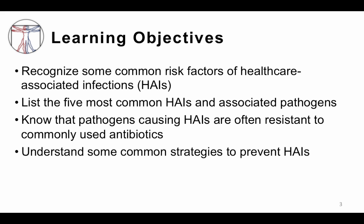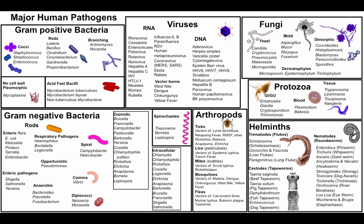Learning objectives for this module are for you to recognize some of the common risk factors of healthcare-associated infections, to be able to list the five most common healthcare-associated infections and their common associated pathogens, know that pathogens causing healthcare-associated infections are often resistant to many commonly used antibiotics, and understand some of the common strategies used to prevent healthcare-associated infections.